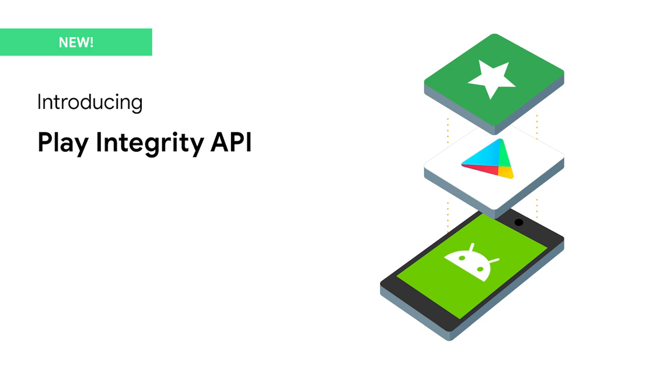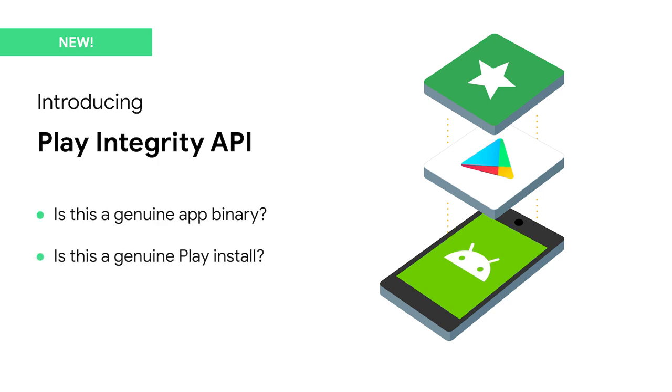The API helps you answer three questions: Is this your genuine binary? Is this a genuine Play install? And is this a genuine Android device? Once you know there is an issue, you can decide how to increase the user friction to reduce the risk to your app.